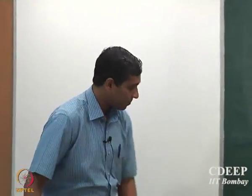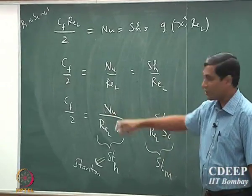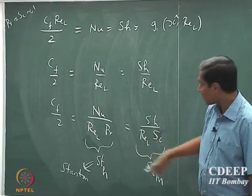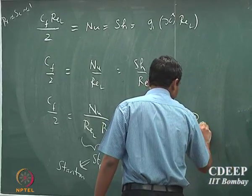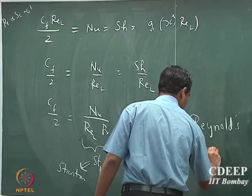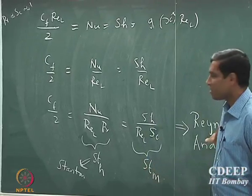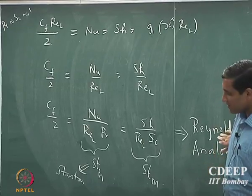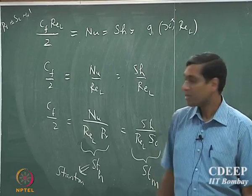You should actually be able to systematically find out what is the expression for each of these dimensionless quantities. This relationship — Cf/2 equal to the heat transport Stanton number equal to the mass transport Stanton number — is what is called the Reynolds analogy. This is very commonly used in different types of heat, mass, and momentum transport calculations because it is very handy.